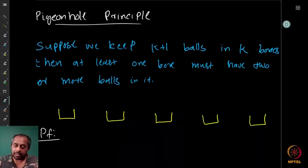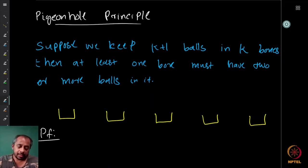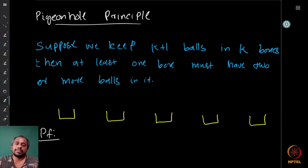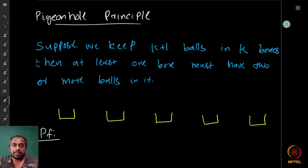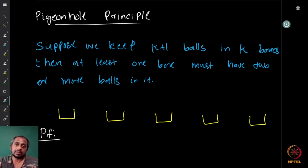So what is this principle? This is something that all of us know by experience and we might have already used it many times. Suppose you have k plus one pigeons — a flock of pigeons comes and there are k plus one of them for some positive integer k — and these go into k pigeon holes, that is, k cages.